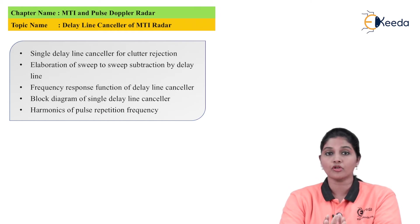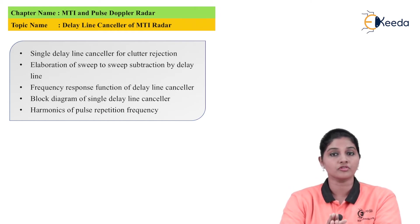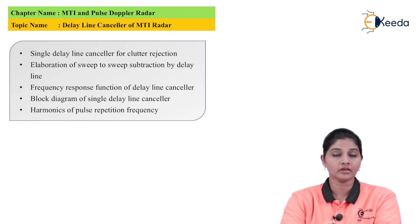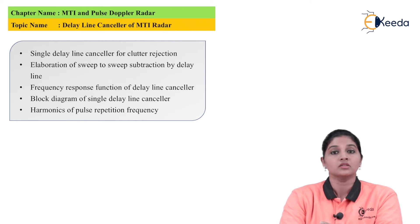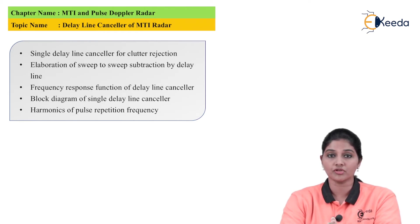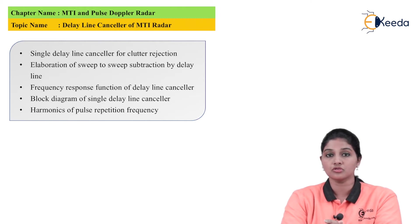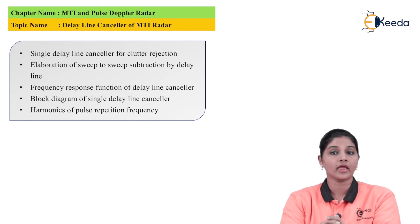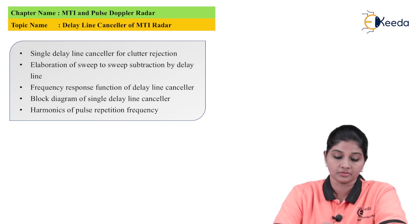Looking at the block diagram of the receiver section of MTI radar, the delay line canceler is considered one of the most important blocks. It is basically used to delay the received frequency by one sweep so that there is a difference between the received frequency and the transmitted frequency, and that signal can be used to display moving targets on the display.